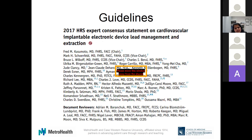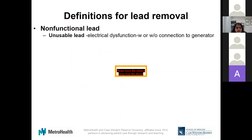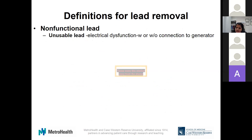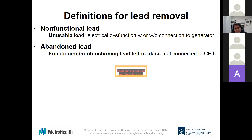This is mostly rooted in the 2017 HRS consensus on device lead management and extraction. As far as definitions are concerned, the first thing you should know about is non-functional leads. Non-functional leads are unusable leads — whether they're connected to the generator is irrelevant. They're electrically dysfunctional and still in the pocket but not something you can use. Abandoned leads, on the other hand, can be functional — they're just left in the pocket and not connected to the generator.